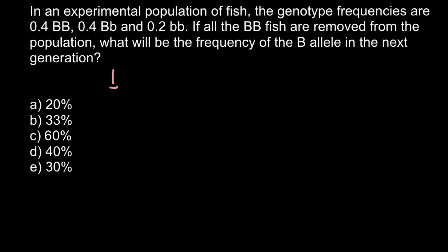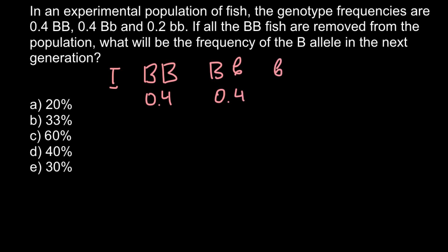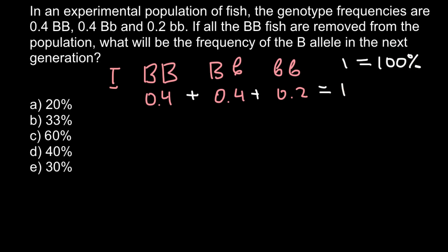In the first generation, the frequencies are as follows: homozygous dominant genotype frequency is 0.4, heterozygous genotype frequency is 0.4, and homozygous recessive genotype frequency is 0.2. Adding all these numbers gives us 1, because 1 represents 100%. In percentage form this is 40%, 40%, and 20%, which add up to 100%.